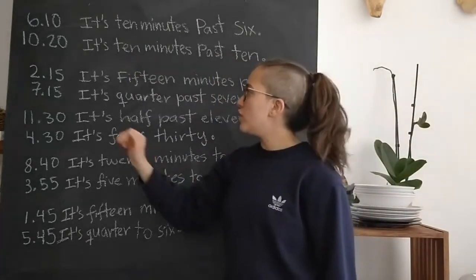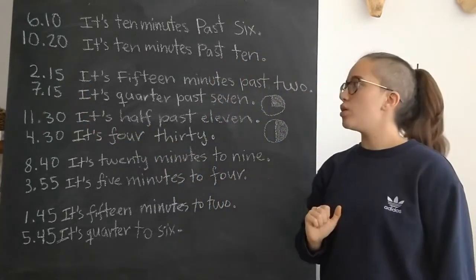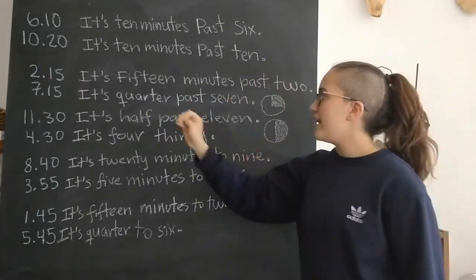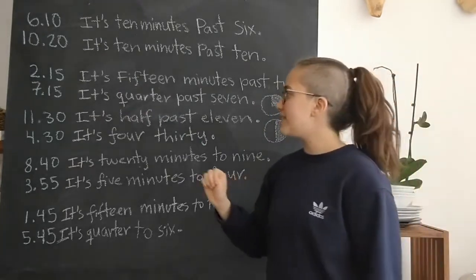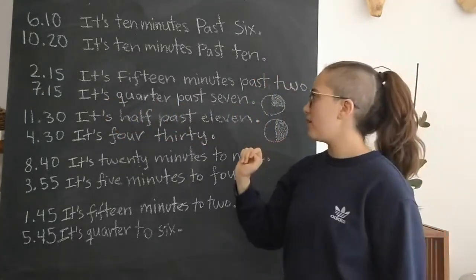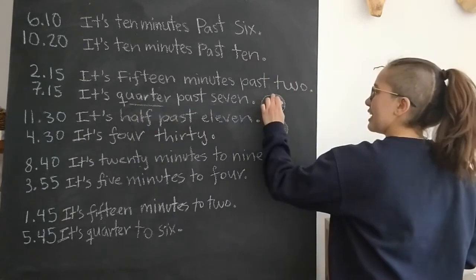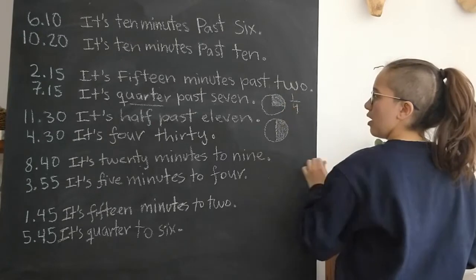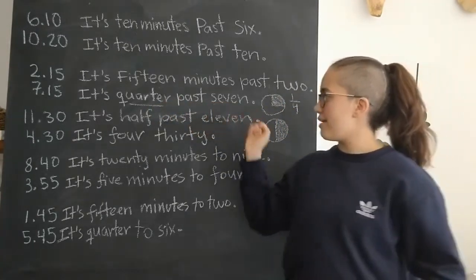Now to say it's two fifteen, there are two different ways. We can say it's fifteen minutes past two, or we can say it's quarter past seven. We use quarter to symbolize that it's this piece, a fourth piece of the clock. Okay, so it is quarter past seven.